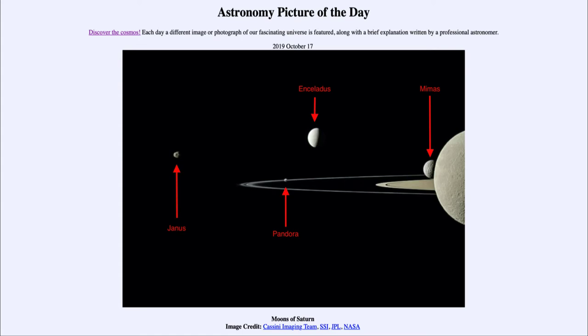Now the final moon that we're looking at over on the far right-hand side, cut off in this image, is the moon Rhea. Now this is the second largest moon of Saturn after Titan.